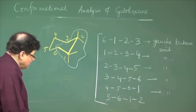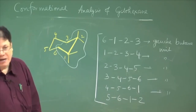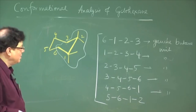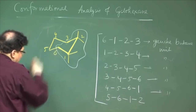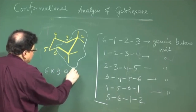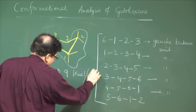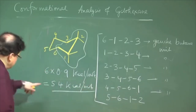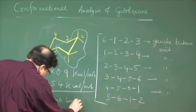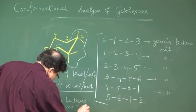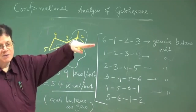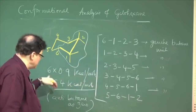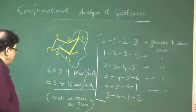The energy associated — we know the excess energy a gauche-butane unit has over the anti form — was 0.9 kilocalorie per mole. So cyclohexane in the chair form has an energy of 6 × 0.9 = 5.4 kilocalorie per mole. Remember, this is not absolute energy; this is taking anti-butane as the zero-point energy. So if anti has 0, that is the starting point, and the cyclohexane chair has 5.4 kcal/mol due to its 6 gauche-butane interactions.